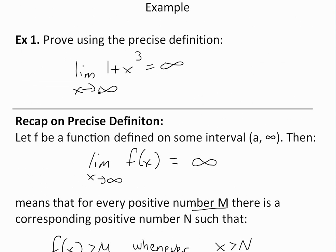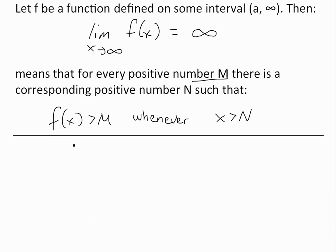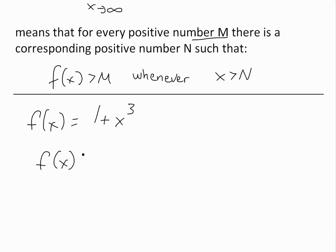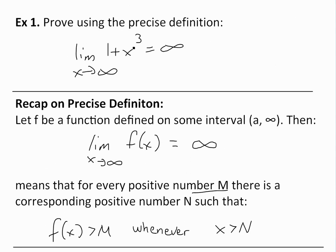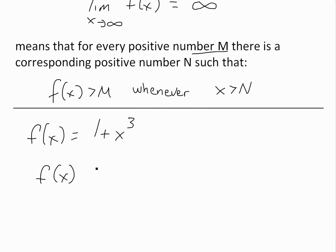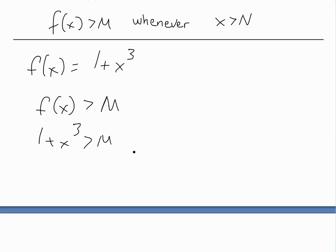In this case, we have f(x) is equal to 1 plus x cubed. To prove that the limit of this approaches infinity as x approaches infinity, we just have to make sure that the precise definition applies. So f(x) is greater than M, or I'll just write that down: 1 plus x cubed is greater than M whenever x is greater than N.